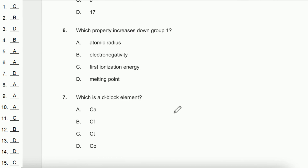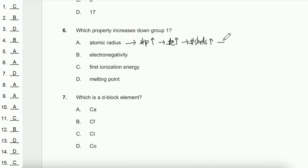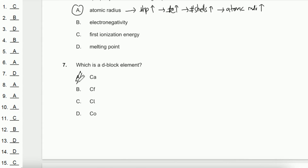Question 6: Which property increases down a group? As you go down a group, the number of protons increases, so the number of electrons and shells also increases, making the atomic radius larger. Question 7: Which is a d-block element? Among the options — C, N, O, Cl — the answer is Co, which is cobalt.